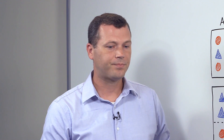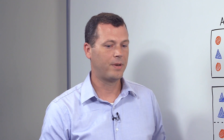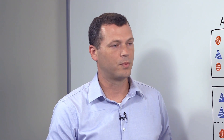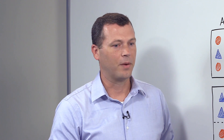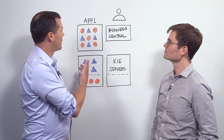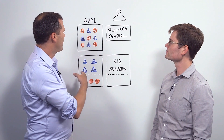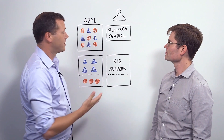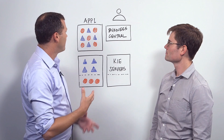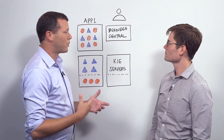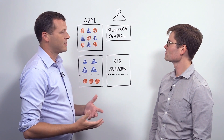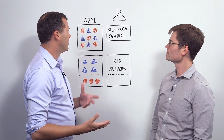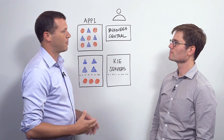So typically when a company has business rules within their application, they're very tightly coupled and they're written in the same language such as Java. Up here we have a representation of that where the circles would represent your business rules or business logic, and the triangles are all your application code.